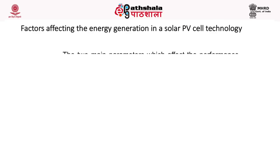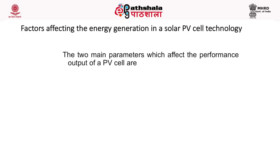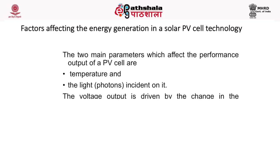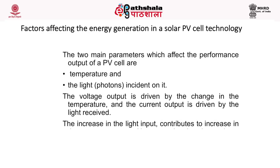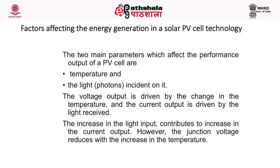Let's see the factors that affect energy generation in solar photovoltaic technology. There are two main parameters that affect the performance output of a PV cell: temperature and light — that is, the photons incident on it. The voltage output is driven by the change in temperature, and the current output is driven by the light received. An increase in light input contributes to an increase in current output. However, the junction voltage reduces with an increase in temperature.